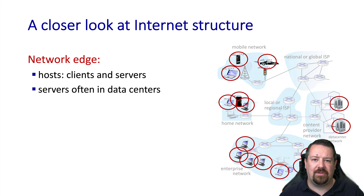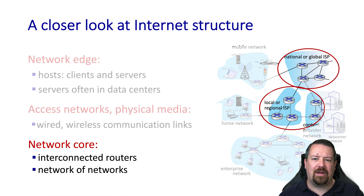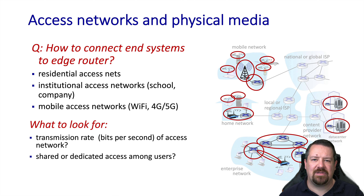The network edge includes hosts and access links. Entire networks can be part of the network edge. Within hosts, we have both clients and servers. These are connected by access networks, also commonly referred to as last mile networks. Access networks may have wired or wireless communication links, or a combination of the two. The core of the network is made up of routers interconnected with one another using wired links, and typically these links are point-to-point. The access networks are designed to connect the hosts or clients to the core of the internet via an access router, sometimes called a gateway.